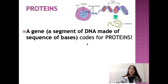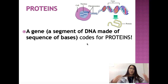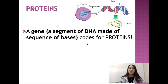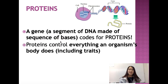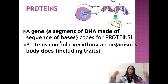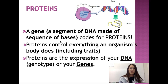Let's talk about proteins before we dive into transcription and translation. Proteins come from a gene — genes tell proteins how they're supposed to be made. We call proteins 'protein products' because genes provide instruction for making proteins. A gene is a segment of DNA made of a sequence of bases coded for proteins. Proteins control everything a body does: all of your traits, internal organs, whether cells divide or not. It's really important that we understand how proteins work.